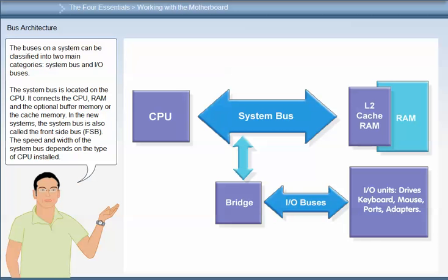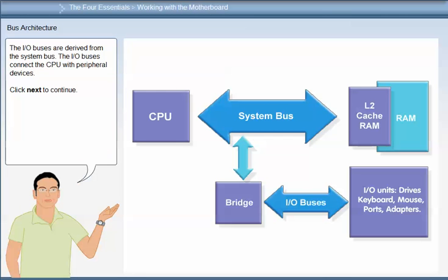The buses on a system can be classified into two main categories: system bus and IO buses. The system bus is located on the CPU and connects the CPU, RAM and the optional cache memory. In new systems the system bus is also called the front side bus (FSB). The speed and width of the system bus depends on the type of CPU installed. The IO buses are derived from the system bus and connect the CPU with peripheral devices.